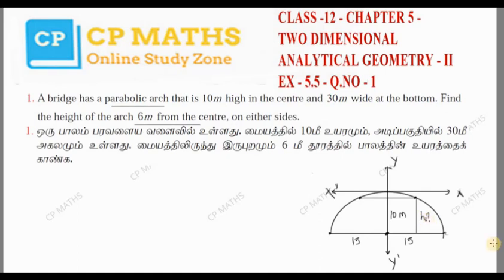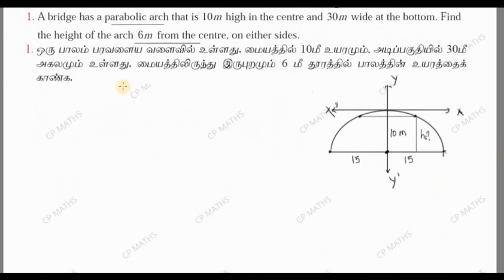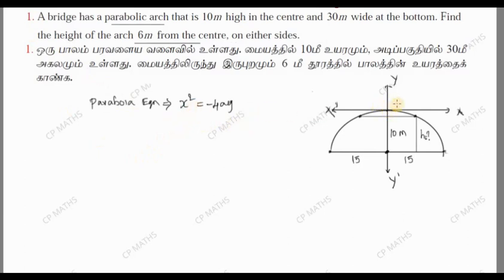The question is clear. This is an open downward parabola. If you look at the general equation, x² = -4ay. This is the parabolic equation, so x² = -4ay. The origin is at (0, 0). The 4a value corresponds to the arch dimensions — you can see the height of the arch and the width of the arch.